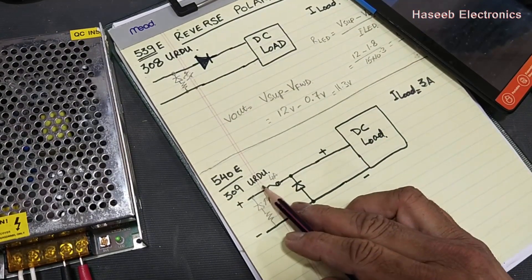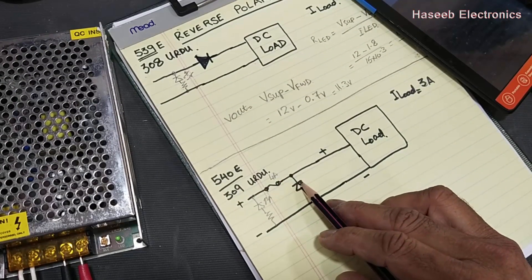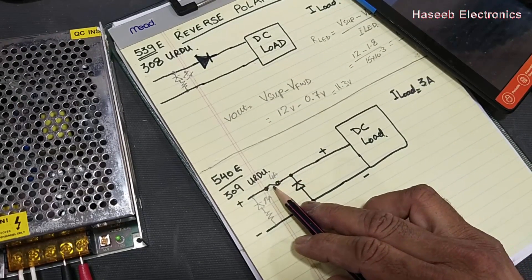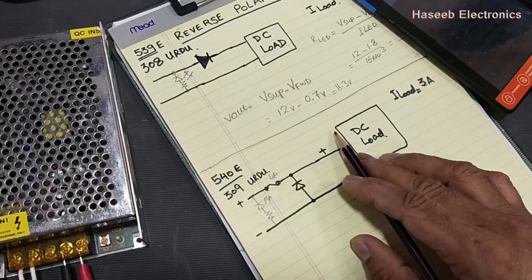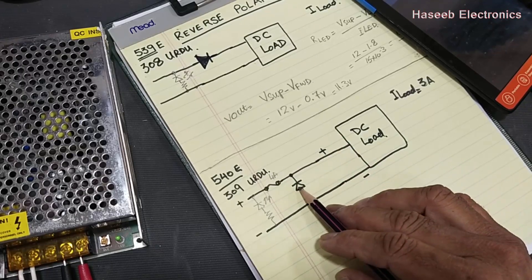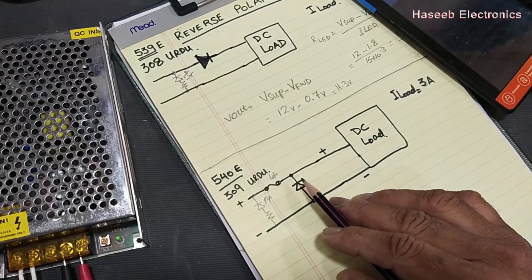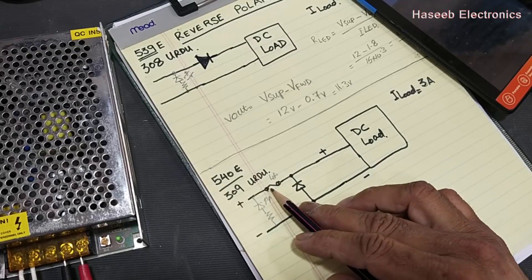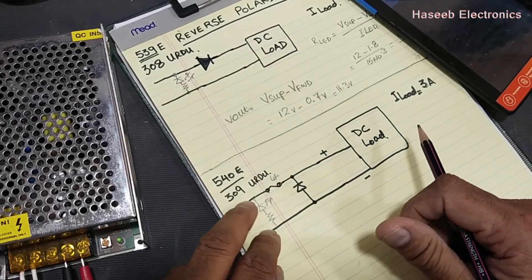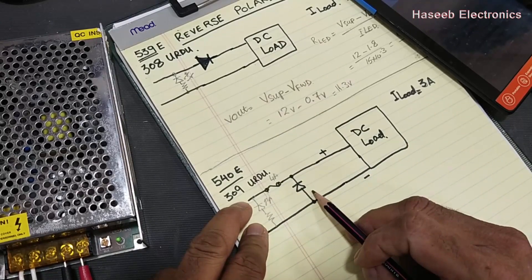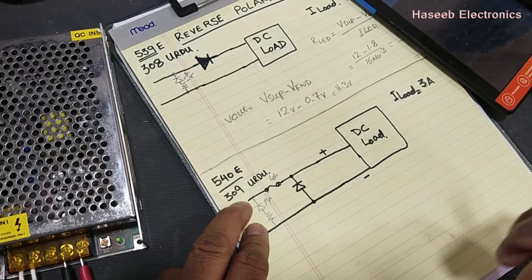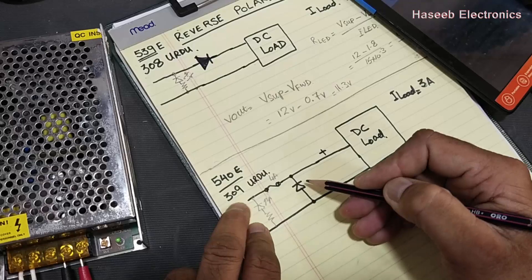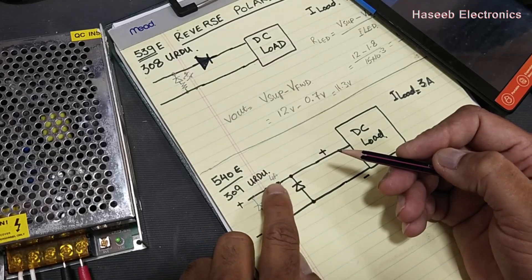4 ampere fuse is used here, but now we have to consider the fuse value. Because in reverse polarity, we have to damage the fuse to protect the circuit, not to damage the diode. We have to damage the fuse, we have to open the fuse.